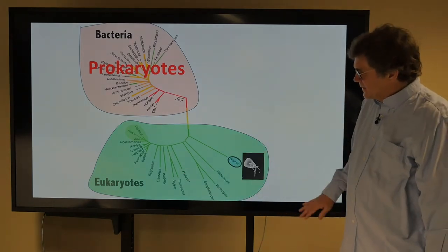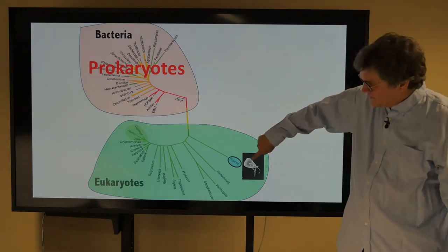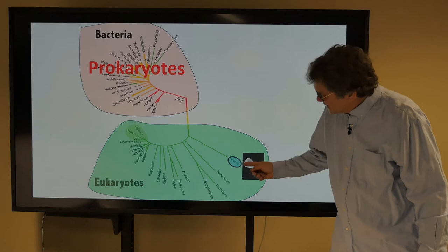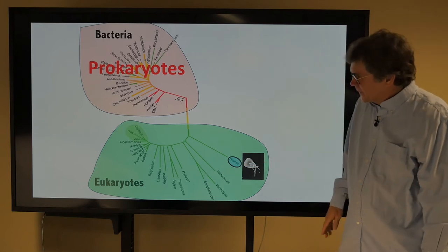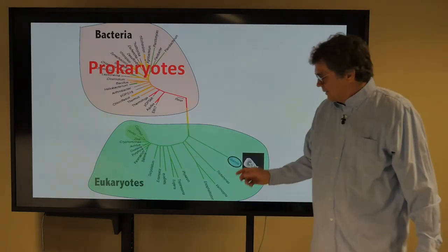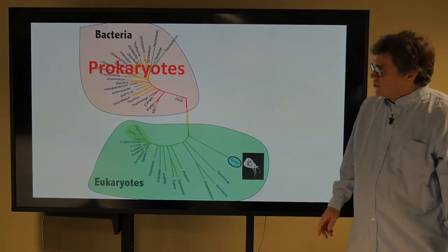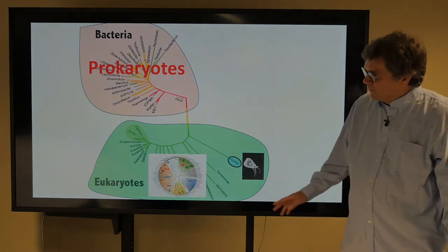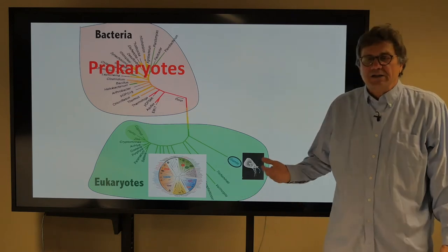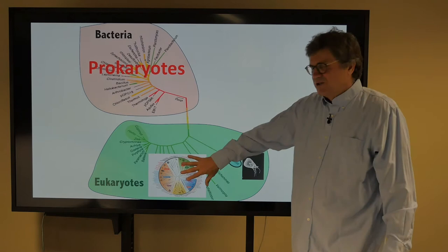Let's look down — here's a eukaryote that's a very basic one. This is a parasite, it's Giardia, and this is what it looks like. Here are people and corn and fungi, but here's Giardia, it's a parasite. We saw this plot before, and this is essentially a way of understanding the phylogenetic tree of eukaryotes.